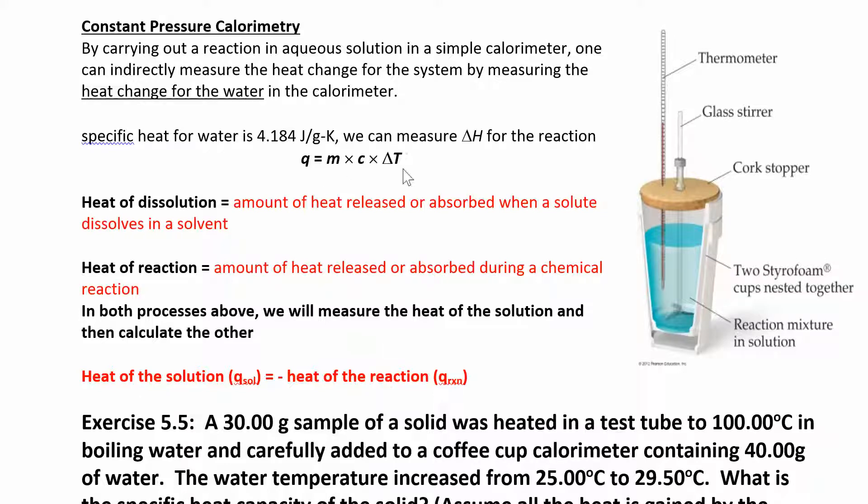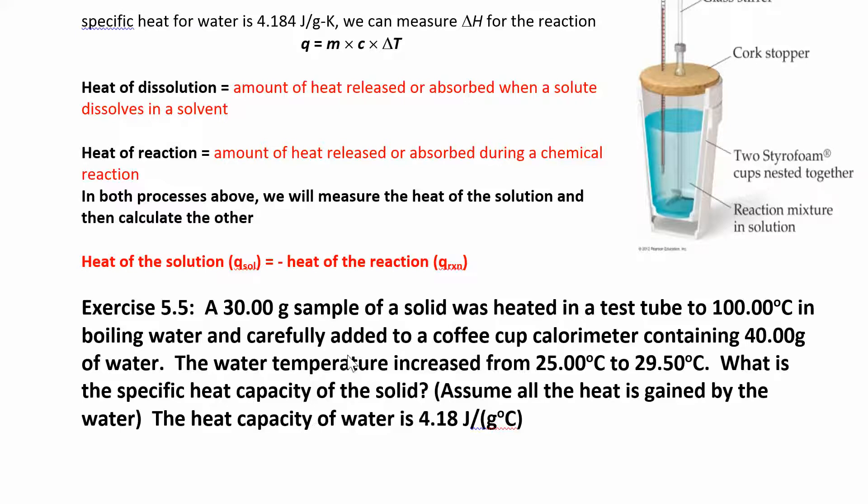So Q equals mc delta T. You basically have two Q's here: the Q of the solution and the Q of the reaction. They're just opposite each other, because if you didn't have anything being absorbed by the calorimeter, then everything given off by the reaction—all the heat given off—is gonna be absorbed by the solution as well as the calorimeter. I don't have that in this equation because we'll see the calorimeter constant in lab, but here we simplify it a little bit.